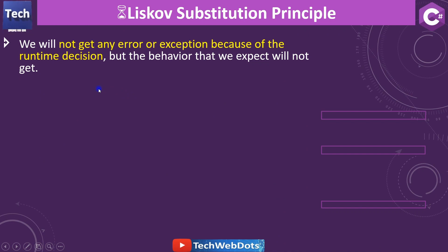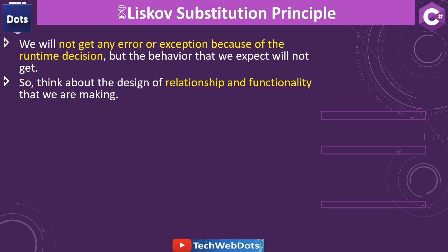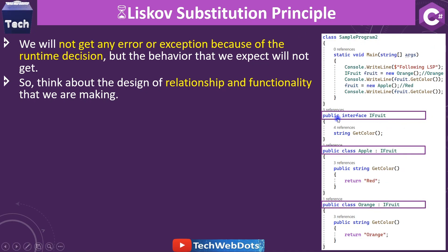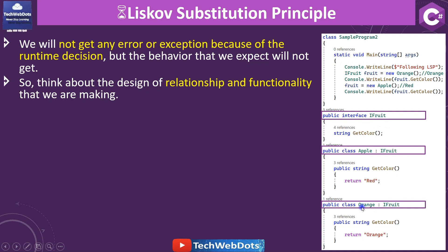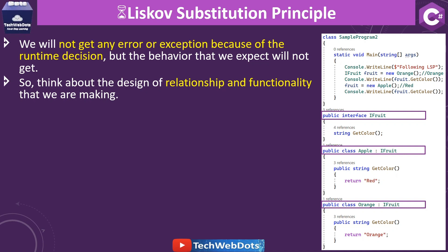We will not get any exception because of runtime decisions but we won't get the expected behavior. The clean solution looks like this: we create one interface called IFruit with a GetColor method. The Apple class implements IFruit and returns red. The Orange class also implements IFruit and returns orange. When we declare an IFruit variable — this is the actual LSP definition — and assign an Orange instance to it, we get the correct result: orange.